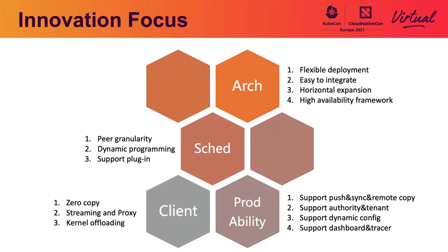Compared with Dragonfly V1, the V2 system has brought innovation in many aspects. In terms of architecture: first, the subsystems are decoupled from each other and support on-demand deployment, making the architecture more flexible. Second, it supports third-party tools to include Dragonfly capability natively, such as various cloud storage download tools. Third, V2 supports better horizontal scalability — with the expansion of CDN nodes, the pressure on the remote source remains basically unchanged.